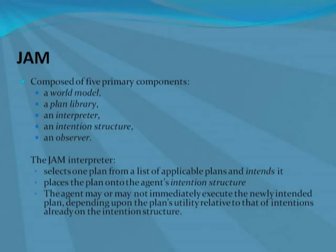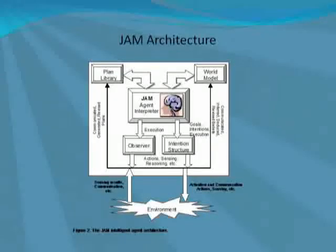The JEM interpreter selects one plan from a list of applicable plans and commits itself to execute the plan. This in turn places the plan under the agent's intention structure. The agent may or may not immediately execute the newly intended plans depending upon the plan's utility. This diagram shows the main JEM architecture, clearly illustrating the relationships among the different components.